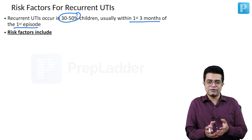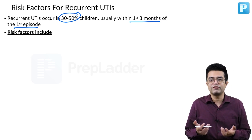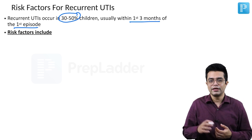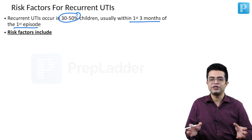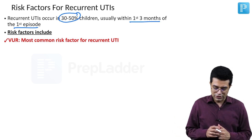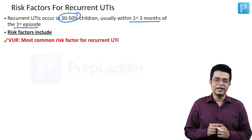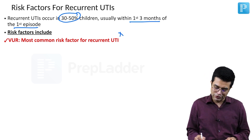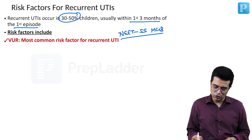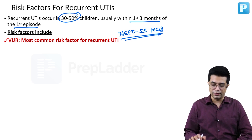What are the risk factors? This is a compilation of risk factors from a table in Nelson as well as mentioned in Indian textbooks. First of all, the most common risk factor for recurrent UTI is vesico-ureteric reflux (VUR). This is a NEET super-specialty recent MCQ. So, the most common risk factor for recurrent UTI is VUR.